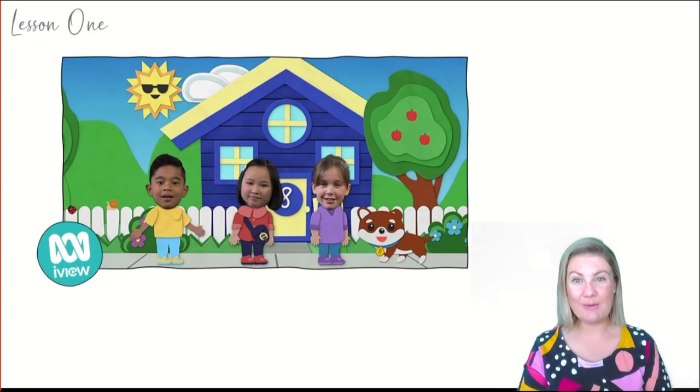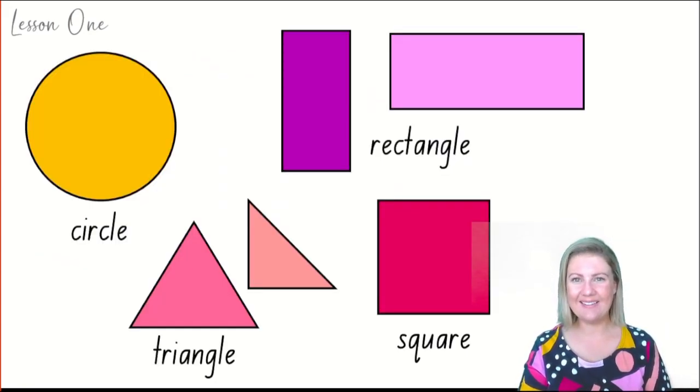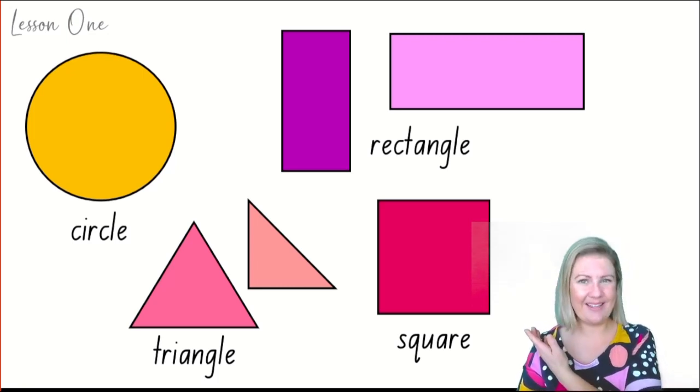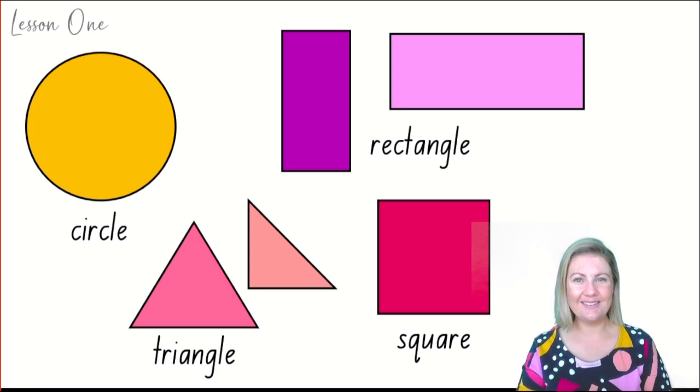I'm going to talk to you about these shapes today. Can you see the shapes next to me? Can you see a yellow circle? Can you see purple rectangles? Can you see some pink triangles and a dark pink square? These are types of 2D shapes.